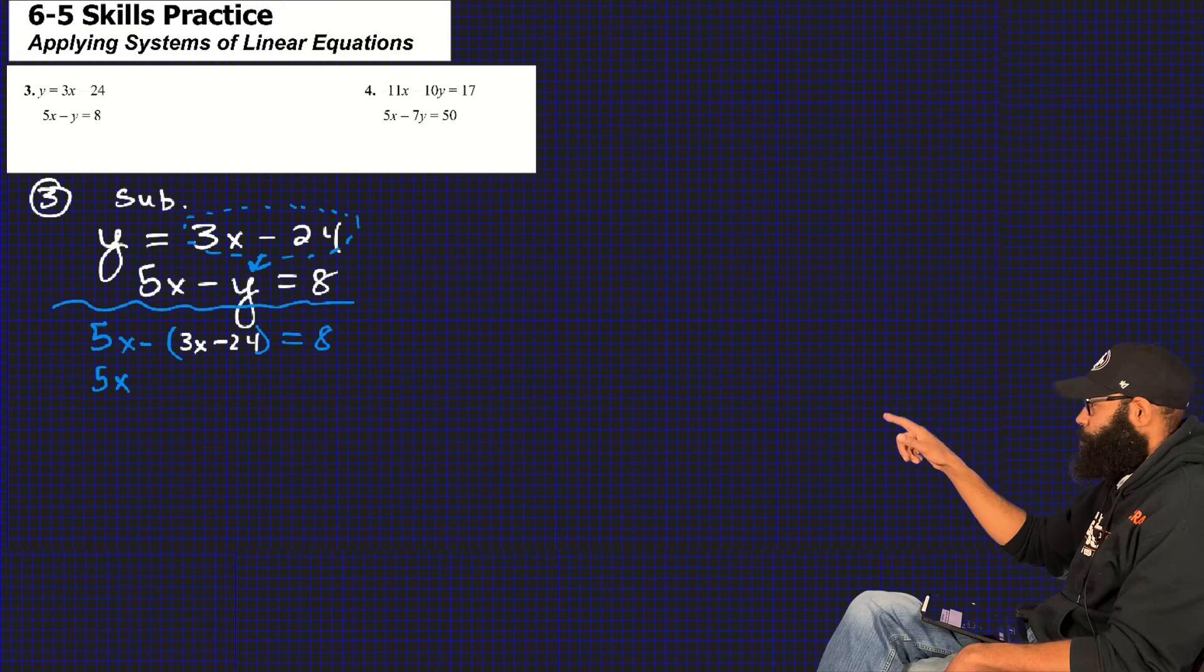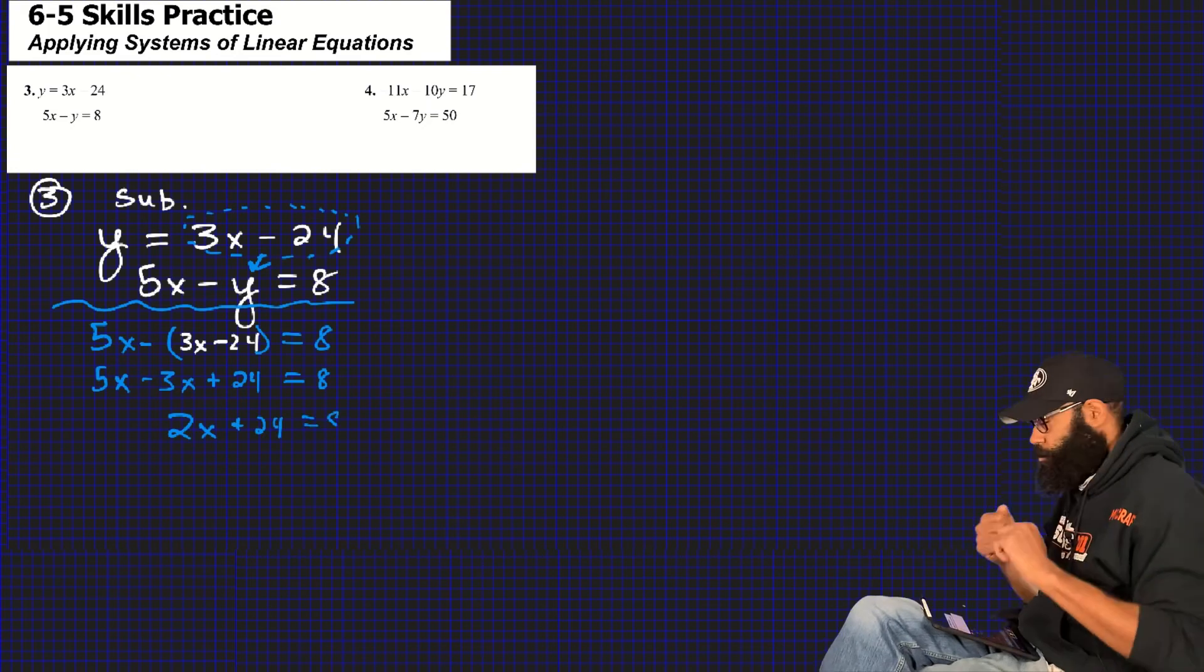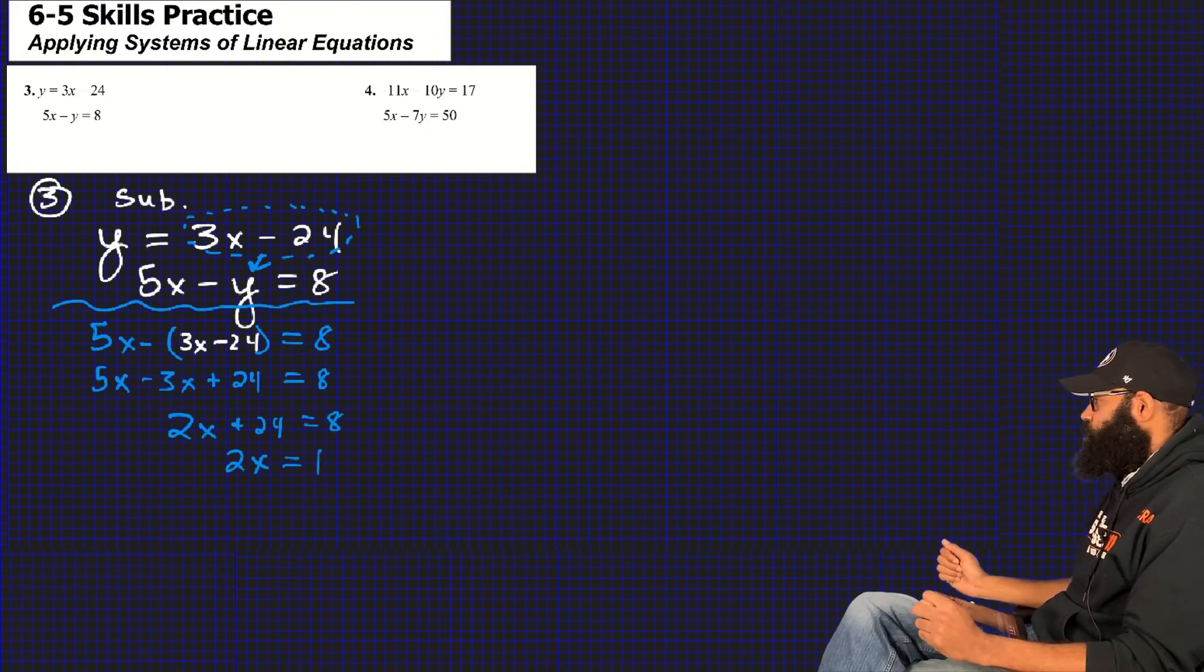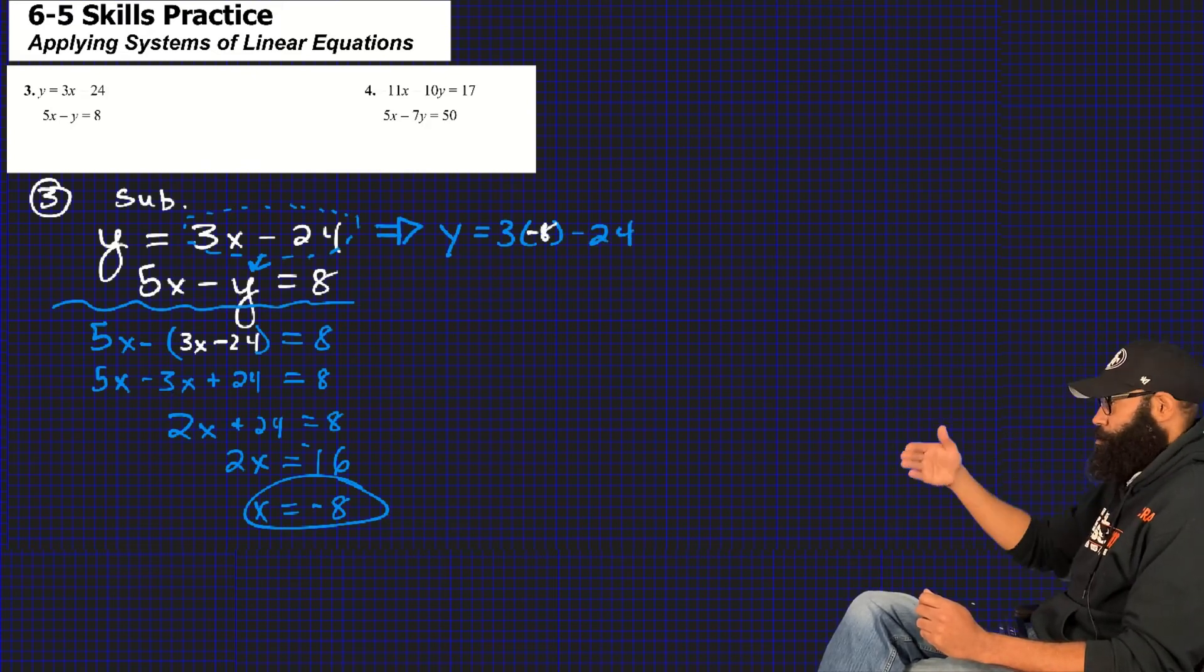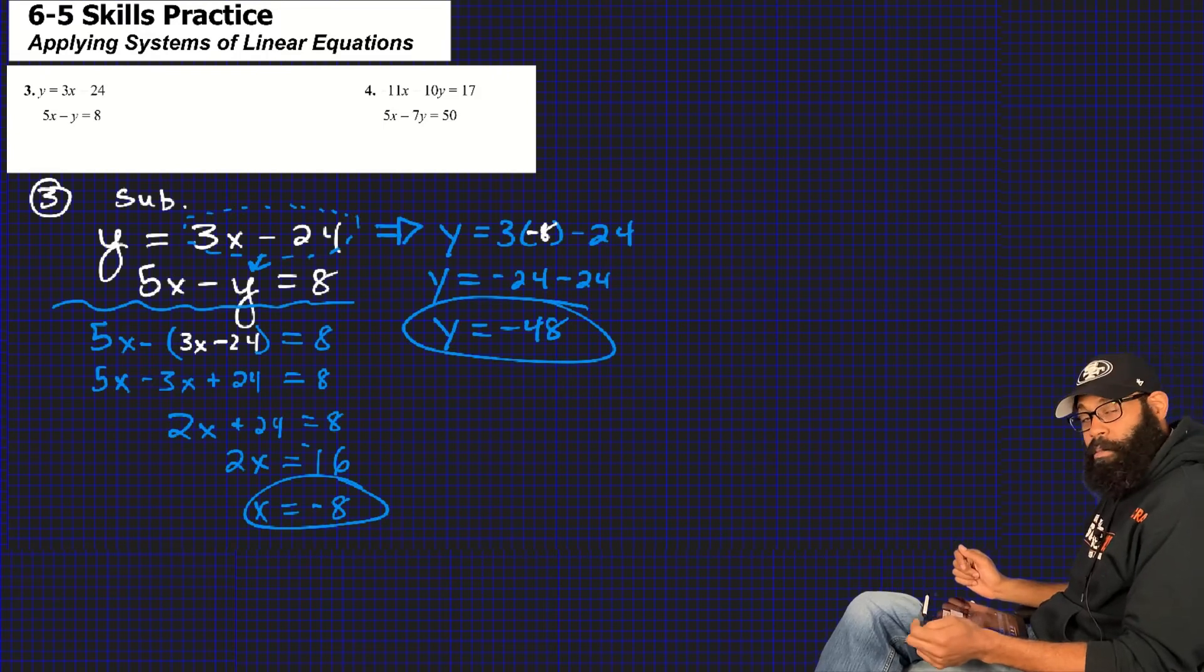Inside the parentheses is the value that I circled: 3x minus 24. And be careful, guys. There's a negative one you need to distribute because it says minus. 5x minus 3x plus 24 equals 8. I got rid of my parentheses by distributing the negative. Distributive property. Collect like terms: 2x plus 24 equals 8. Subtract 24 from both sides, so 2x equals negative 16. x equals negative 8. And now, of course, what does y equal? Well, I'll tell you what y equals: 3x minus 24. So 3 times negative 8 minus 24. Negative 8 times 3 is negative 24, and of course negative 24 minus 24 is negative 48.